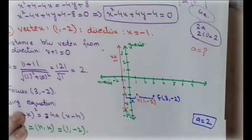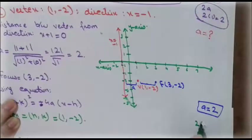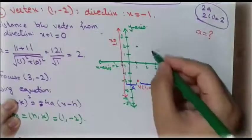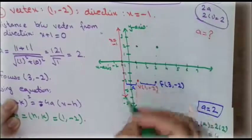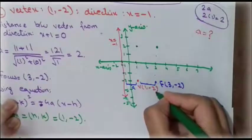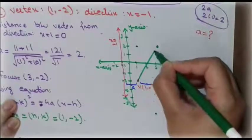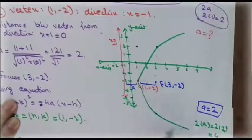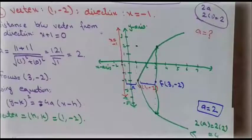To draw this parabola, we use the latus rectum again. With a = 2, the half-length is 2a = 4. Moving 4 units up and 4 units down from the focus (3, −2) gives the endpoints of the latus rectum. This tells us how wide the parabola is. That concludes today's lecture on finding the equation of a parabola when given a vertex and a directrix line.